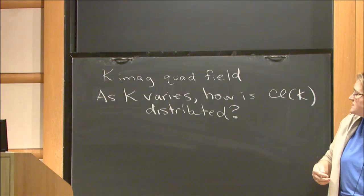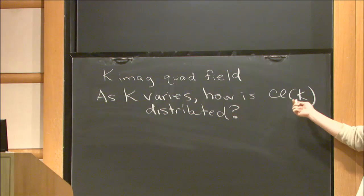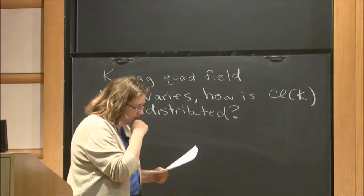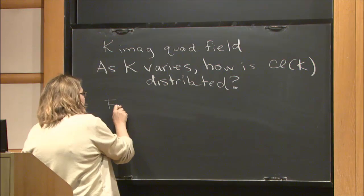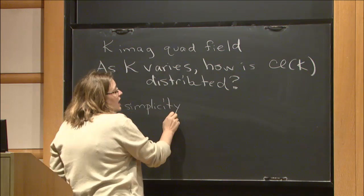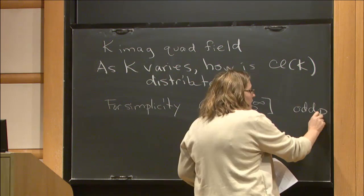It makes sense to filter this question by the type of field, and the first case is that of imaginary quadratic fields. For the first part of the talk, I'm going to focus not on the class group itself, but its Sylow p-subgroup. For simplicity, I'll ask not about the whole class group, but just the p-torsion for some odd prime p.